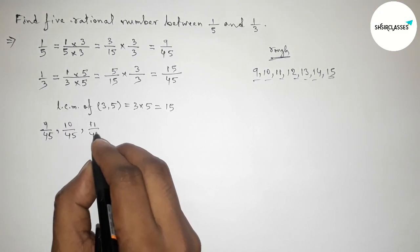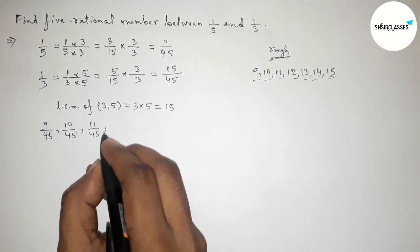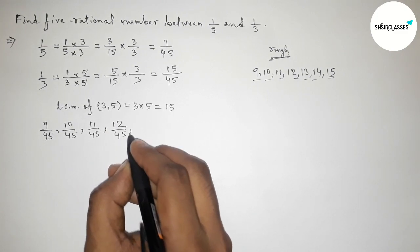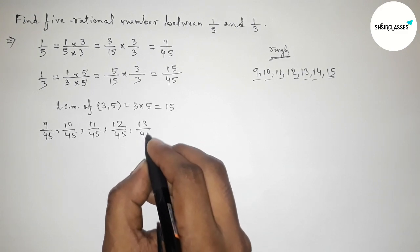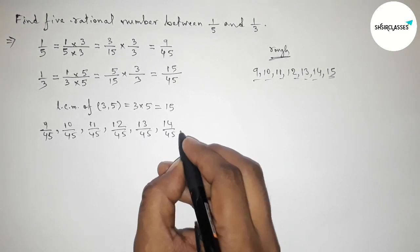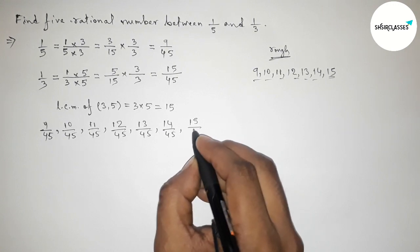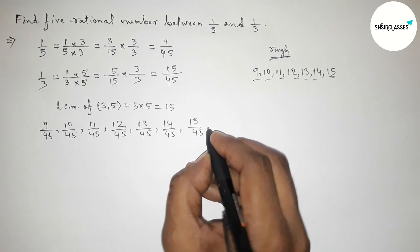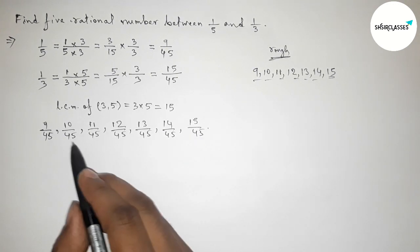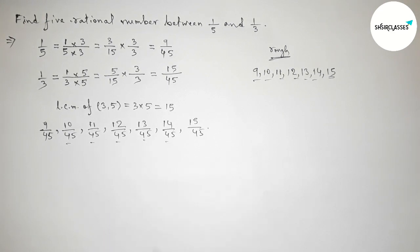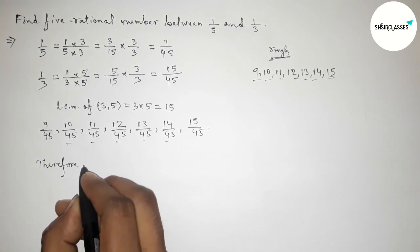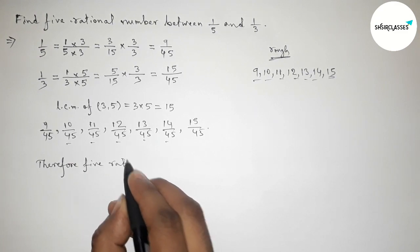The fractions between 9/45 and 15/45 are: 10/45, 11/45, 12/45, 13/45, and 14/45. These are the required 5 rational numbers between 1/5 and 1/3.